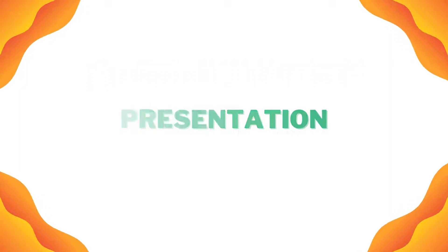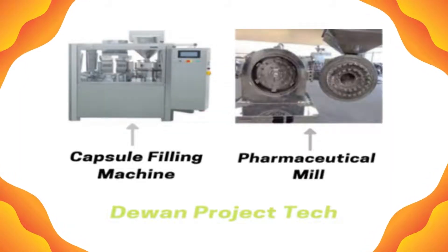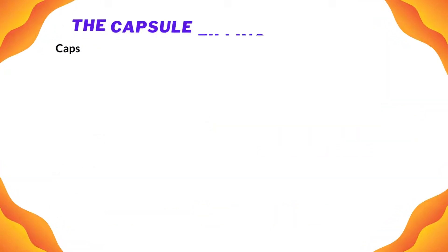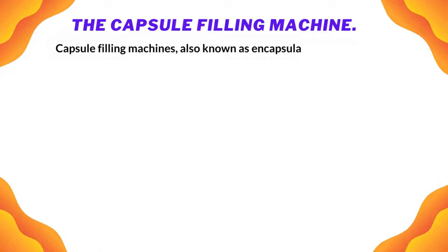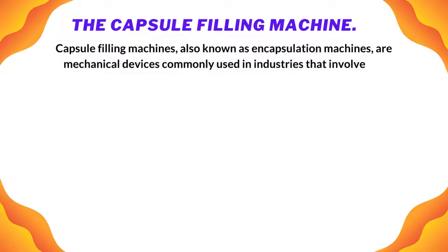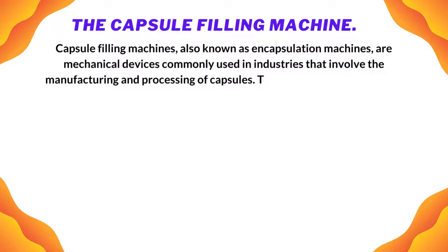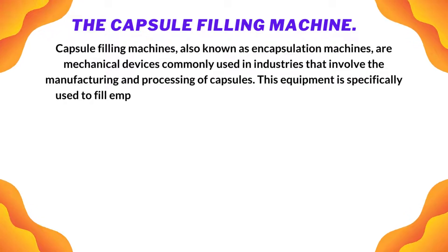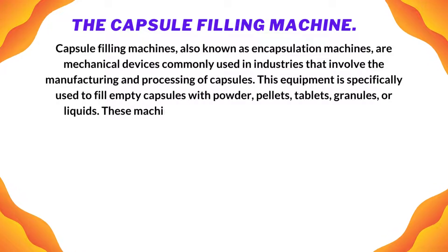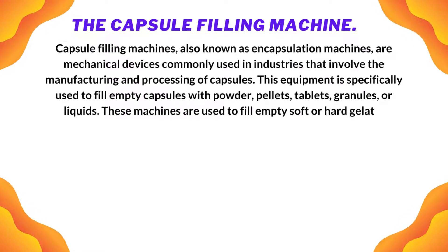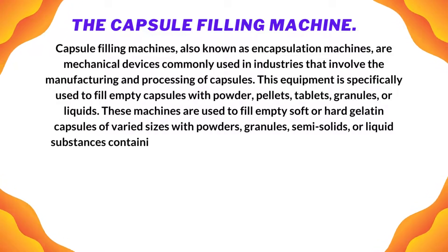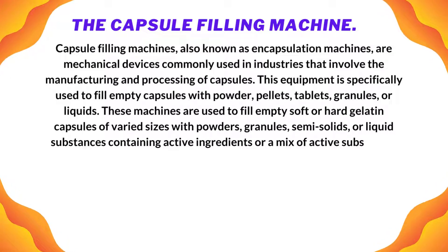Capsule filling machines, also known as encapsulation machines, are mechanical devices commonly used in industries that involve the manufacturing and processing of capsules. This equipment is specifically used to fill empty capsules with powder, pellets, tablets, granules, or liquids. They are used to fill empty soft or hard gelatin capsules of varied sizes with powders, granules, semi-solids, or liquid substances containing active ingredients.